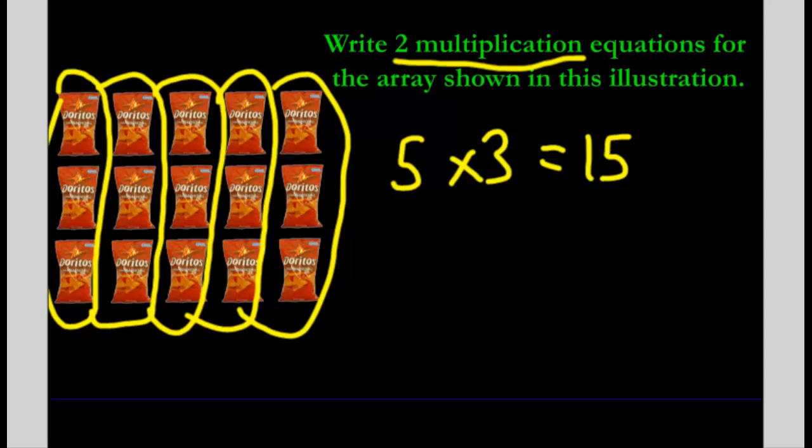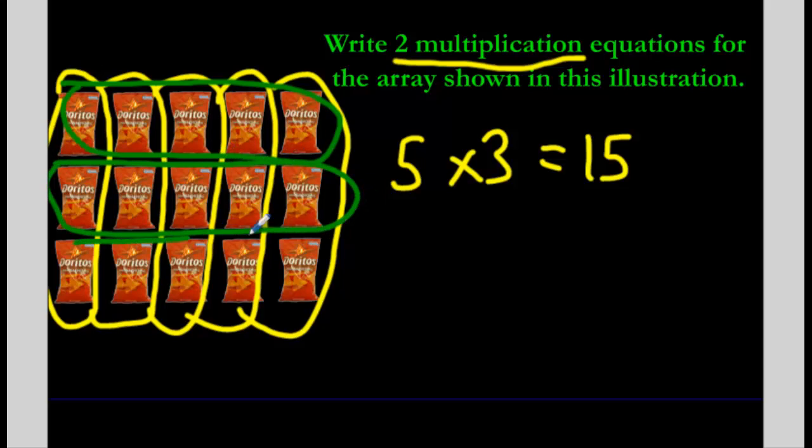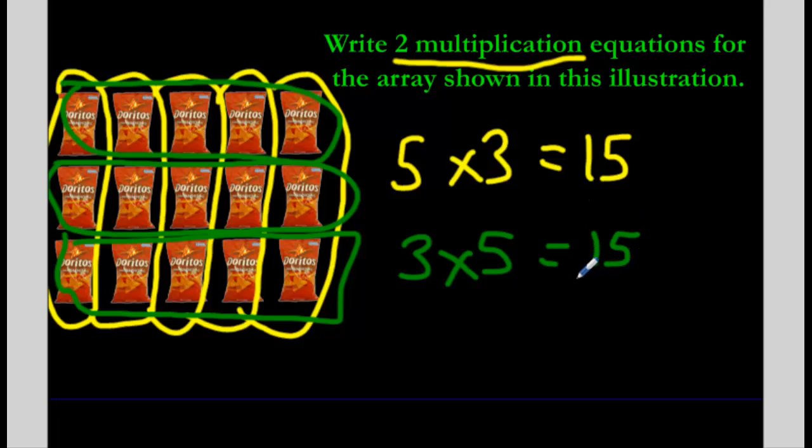Or we could have made groups sideways. We could have went like this. We could have made a group this way. We could have and ignore those yellow lines. Just look at the green one. Now could have made a second group like this and a third group like this and now it's three groups and there's five in each one. So we said three times five and the numbers flipped again like how we saw in the last example and that's going to be 5, 10, 15. The amount of bags of chips, the number of bags of chips didn't change. It's just the way the equation is set up that did.